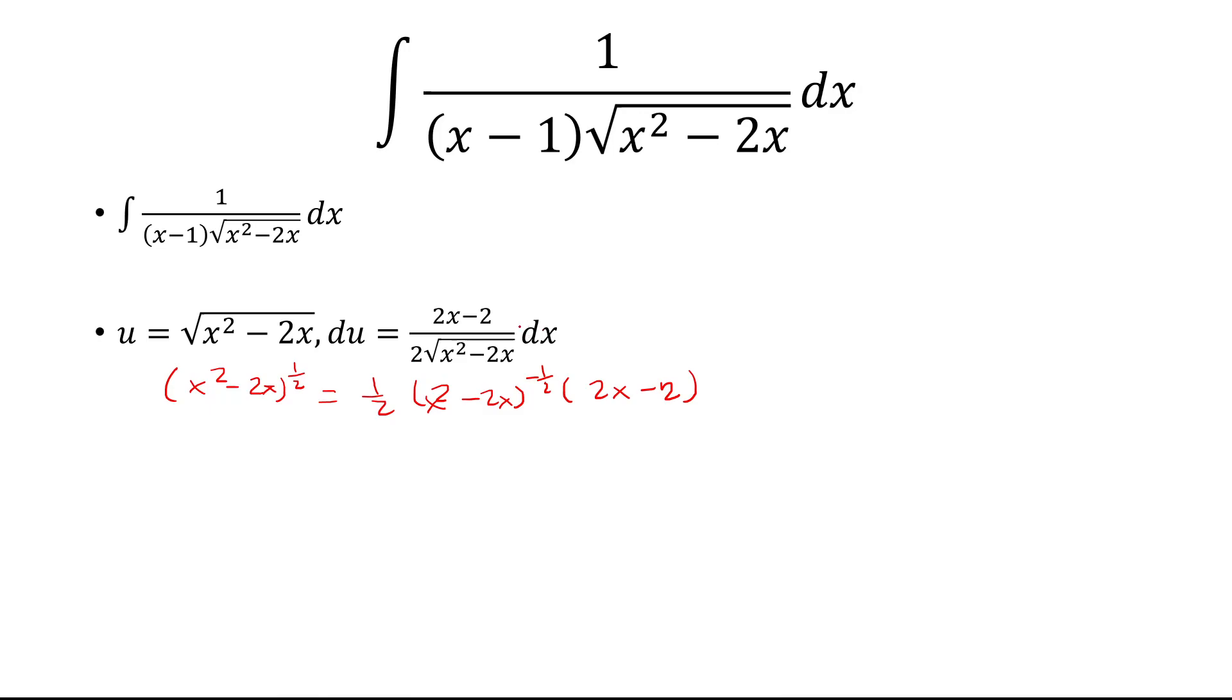And now we can solve for dx. So, we'll first factor out a 2 from the top. And this 2 is going to cancel with the bottom 2. And then, dx, we multiply both sides by square root of x squared minus 2x over x minus 1. And then we'll have that times du.